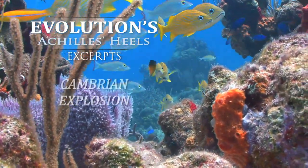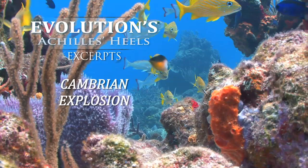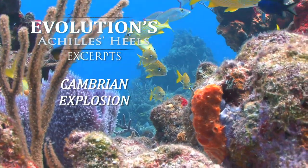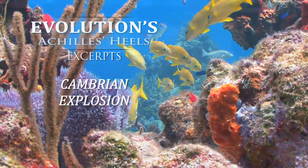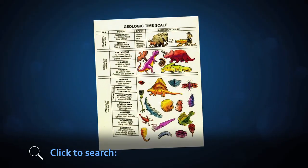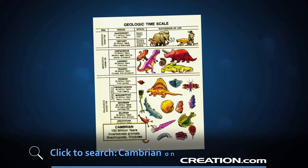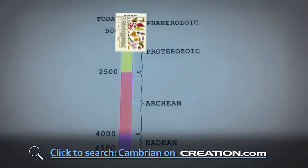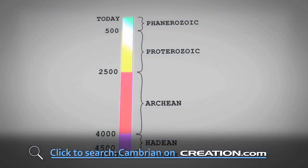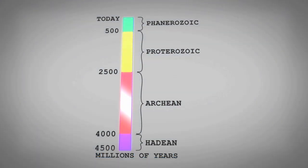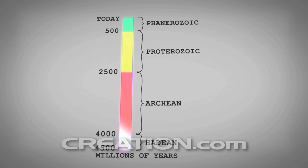One of the most intractable problems in paleontology is one of Darwin's own devising. When Darwin wrote The Origin of Species, he knew of a group of fossils low in the geological column called the Cambrian. Since Darwin believed that all animals shared common ancestors, he believed that the animals in the Cambrian must therefore have ancestors in the rocks below them.